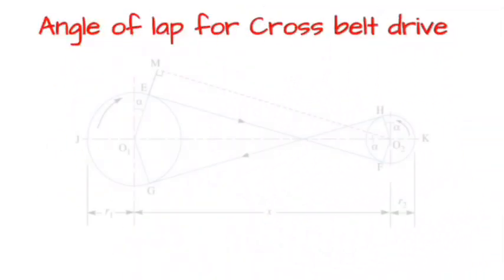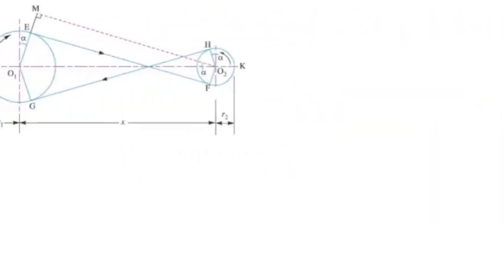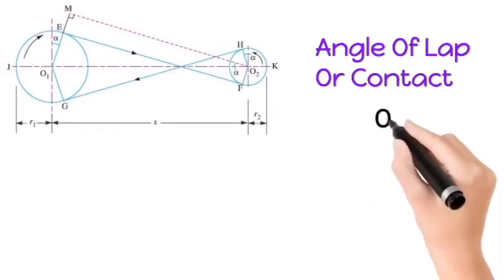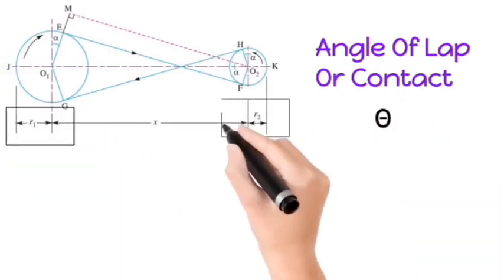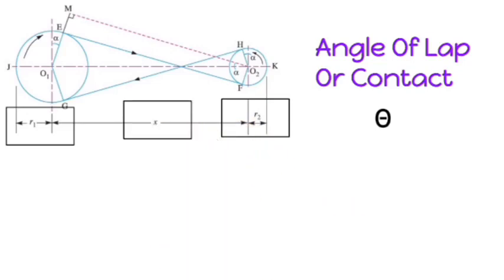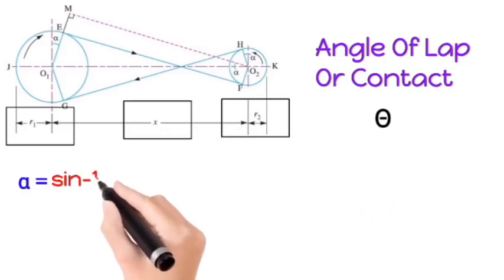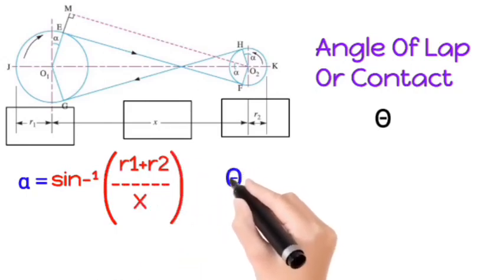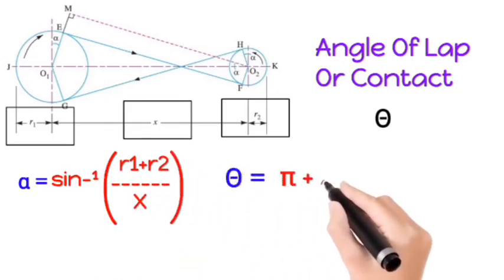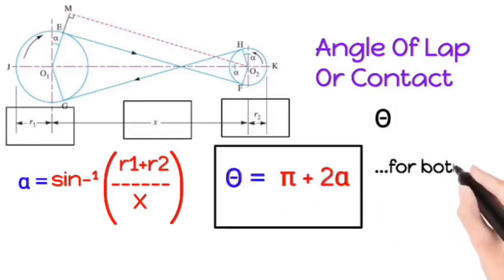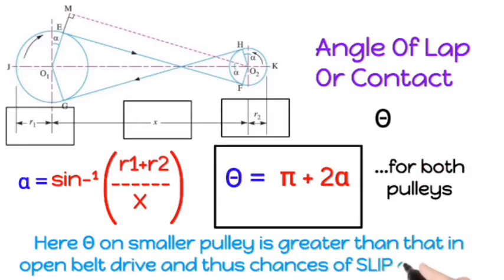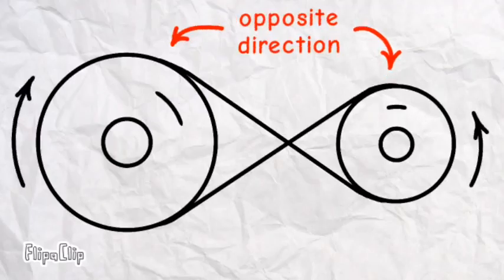Angle of lap for cross belt drive. Angle of lap or contact theta. Larger pulley radius, smaller pulley radius, distance between the centers. Alpha is equal to sin inverse of r1 plus r2 upon c. And theta is equal to pi plus 2 alpha. This is for both the pulleys. Here, theta of smaller pulley is greater than that of the open belt drive. And thus, chances of slip are less.